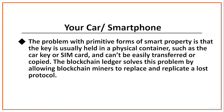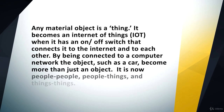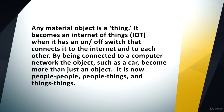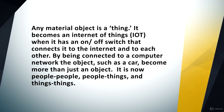Then the blockchain Internet of Things — the IoT. Any material object is a thing, and it becomes an Internet of Things when it has an on and off switch that connects it to the Internet and to each other. By being connected to a computer network, the object, such as a car, becomes more than just an object.